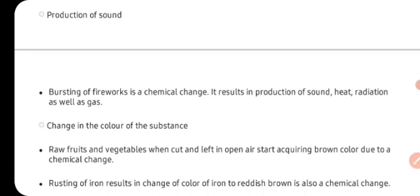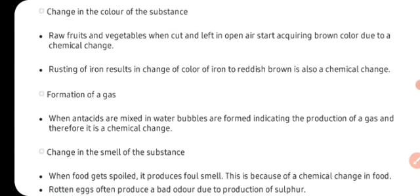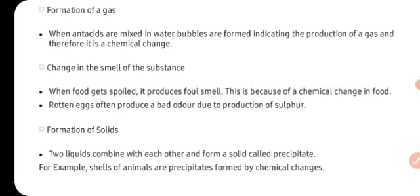Second property aap dekhte hai — production of sound. To fire work ko jab hum burst karte hai, to aapko sound, heat, yeh sari cheezein usmein se nikalti hui dikhai deti hai. Change in the color of the substance — chemical change mein color bhi change hota hai. For example, jo kachhe phal aur sabziyan hoti hai, agar aap inko kaat kar air mein kuch samay ke liye chhod den, to aap dekhte hai ki woh brown color mein convert ho jaata hai uska surface. Isi tariqe se rusting of iron results in change of color of iron to reddish brown — yeh bhi ek chemical change ka hi characteristic feature hai. Formation of a gas ka example aap dekh sakti hai — ki jab kisi antacid ko mix karte hai water mein, toh kuch bubbles usmein dikhai deti hai. Toh yeh bubbles jo hoti hai, woh production of gas ko indicate karti hai — toh yeh bhi ek chemical change hai.